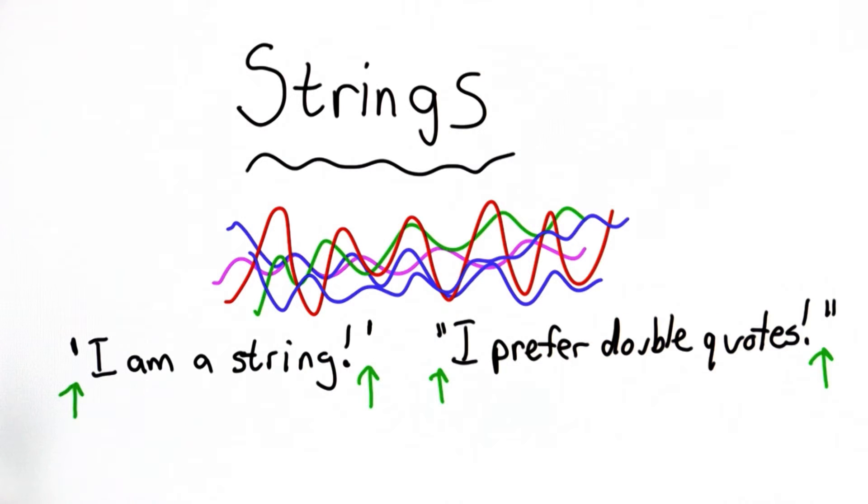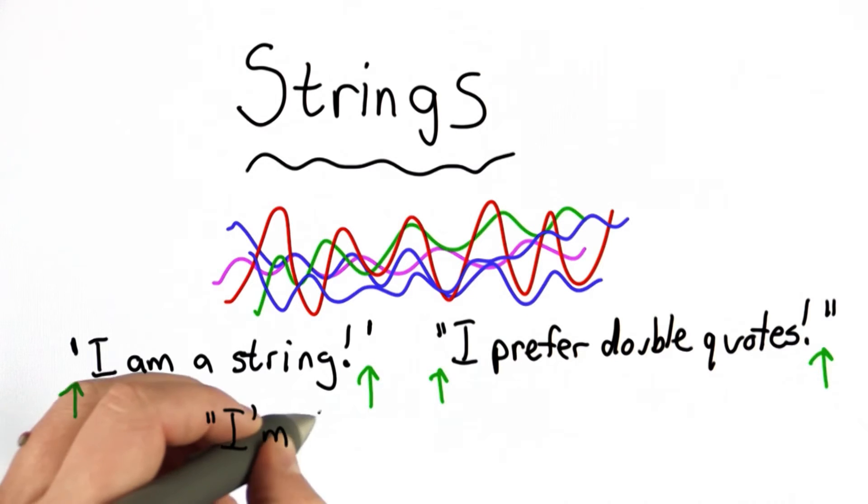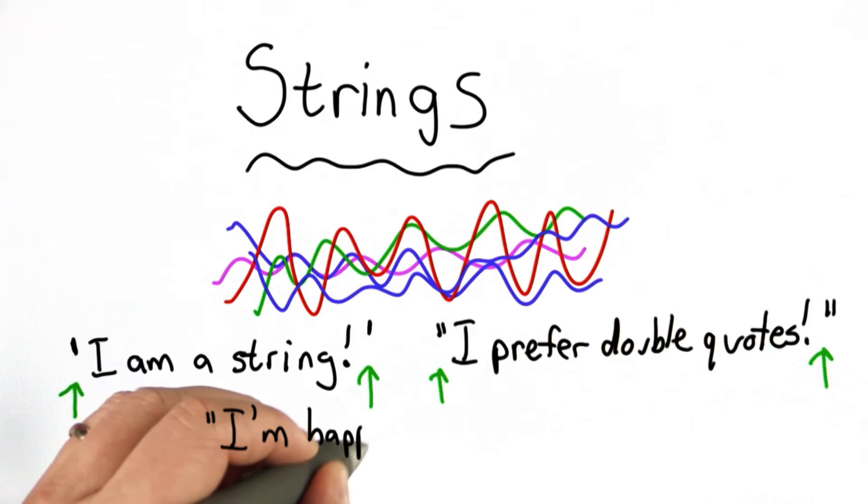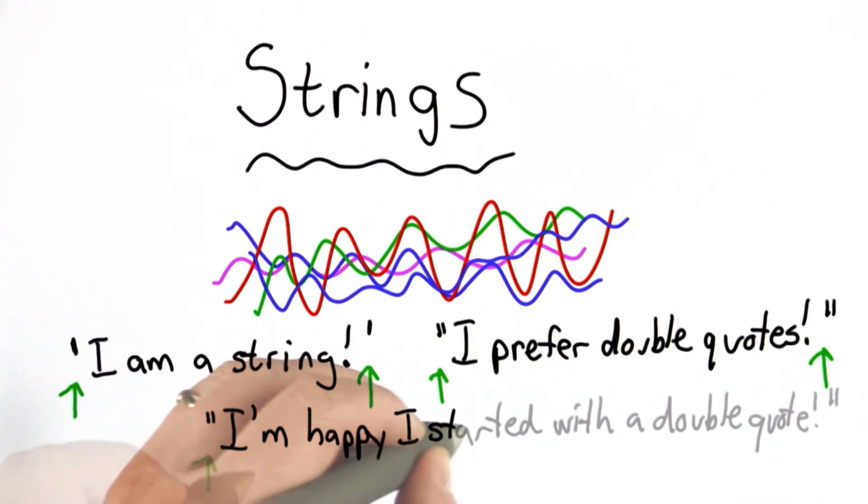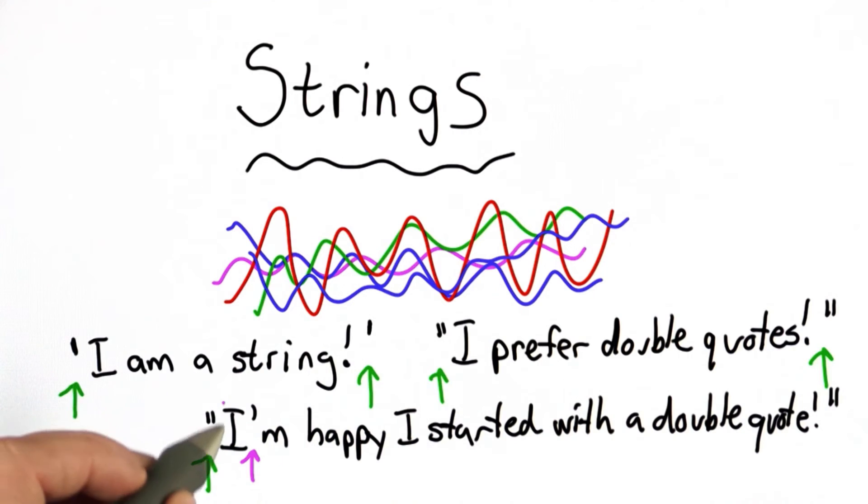And that's actually a handy property because that means we can have the other kind of quote within our string. The string starts with a double quote. It contains a single quote inside it. But because we started with a double quote, that single quote doesn't end the string. That single quote is just like another character in the string. The string continues until the closing double quote.